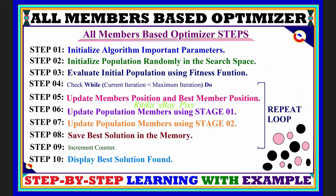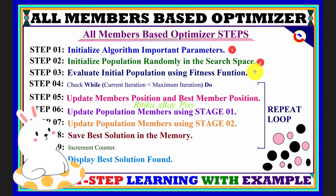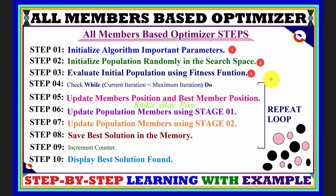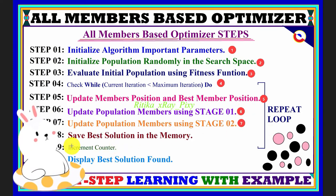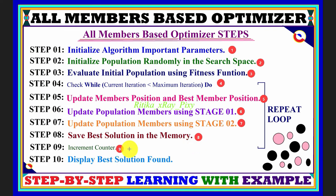The algorithm steps are: first, initialize the algorithm parameters; then initialize the population for the agents in the search space. After that, using the cost function or objective function, we evaluate the population. We then check whether the current iteration is less than the maximum iteration, update the agent's positions in the search space using Stage 1 and Stage 2, save the best solution, increment the counter, and check the stopping criteria. If not met, we repeat the loop; otherwise we display the best solution.